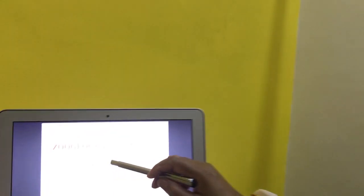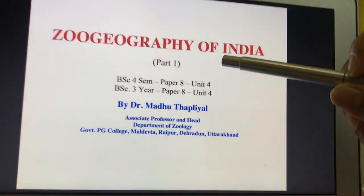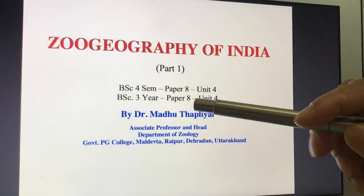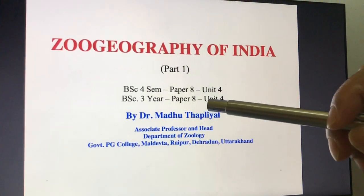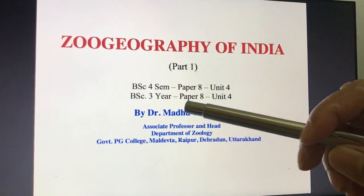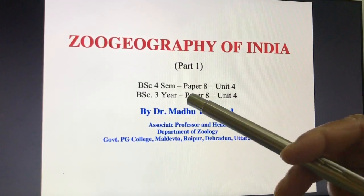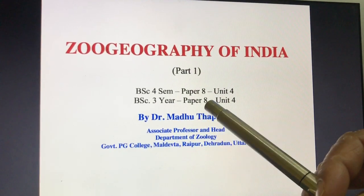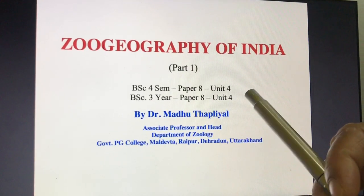Good morning students. I hope that you all will be safe and today I am going to start with Zoogeography of India, Part 1. It's a syllabus of B.Sc. 4th Semester Paper 8 Unit 4, and B.Sc. 3rd Year Paper 8 Unit 4.